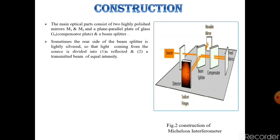Sometimes, the rear side of the beam splitter is slightly silvered so that the light coming from the source is divided into two parts: first reflected and second transmitted. Both the beams are of equal intensity.